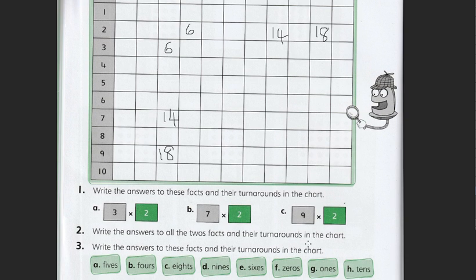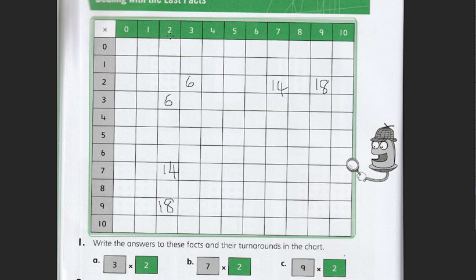The next question is write all the answers for the 2's facts and their turnarounds. So start at the top. We've got 0 times 2 is not 8. I don't even know why I did that. It's 0. 1 times 2 is 2. 2 times 2 is 4. 3 times 2 is there. 4 times 2 is 8.